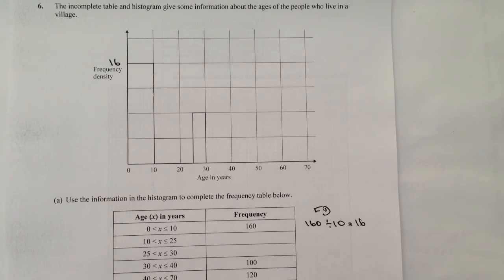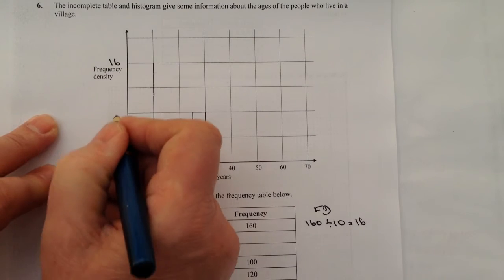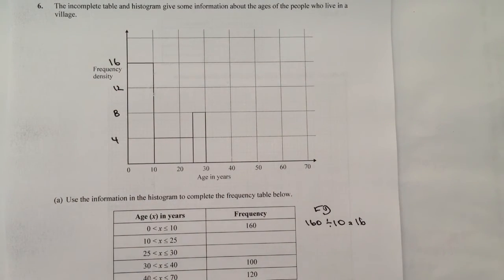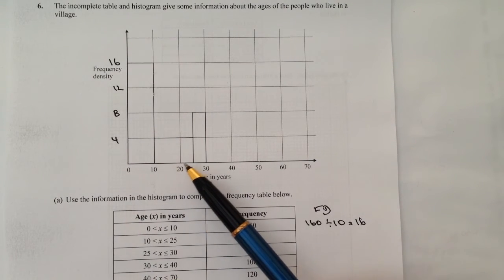Because if this is 16, then it kind of makes sense that I can now divide this up into 4, 8 and 12, because then they're all equidistant. And that's great because I then know that my second class width, which is this one here between 10 and 25, has a frequency density of 4.